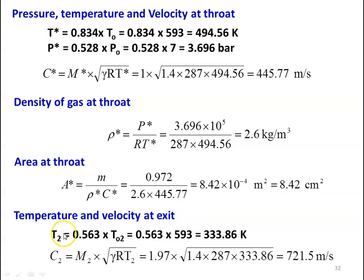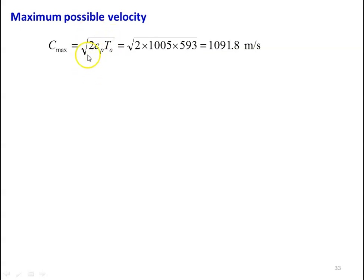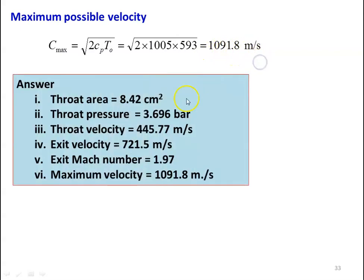Temperature and velocity at the exit section: T2 equal to 0.563 into TO2 which is 0.563 into 593 equal to 333.86 Kelvin, and C2 equal to M2 into square root of gamma R T2 which is 1.97 into square root of 1.4 into 287 into 333.86 equal to 721.5 meters per second. Maximum velocity: C maximum equal to square root of 2 CP into TO, which is square root of 2 into 1005 into 593 equal to 1091.8 meters per second. Answer: throat area 8.42 centimeter square, throat pressure 3.696 bar, throat velocity 445.77 meters per second, exit velocity 721.5 meters per second, exit Mach number 1.97, maximum velocity 1091.8 meters per second.